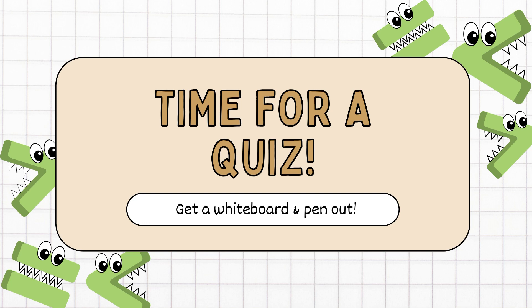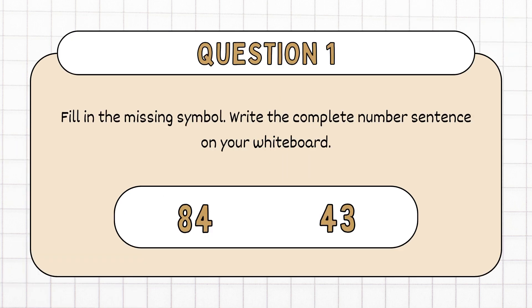Time for a quiz. Get a whiteboard and a pen out, or a book and a pen. Question 1: Fill in the missing symbol. Write the complete number sentence on your whiteboard.